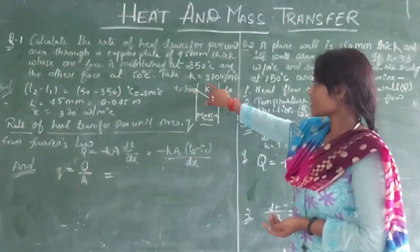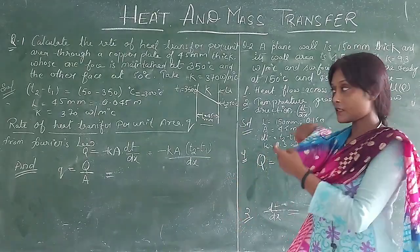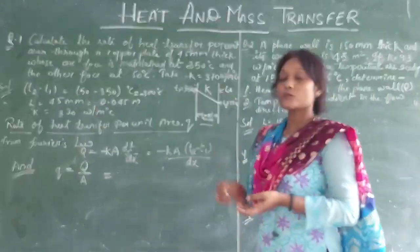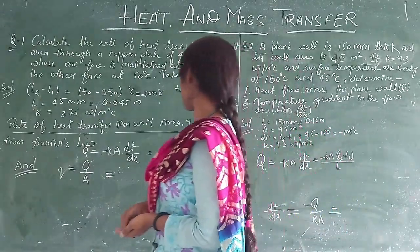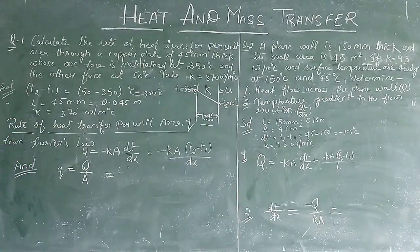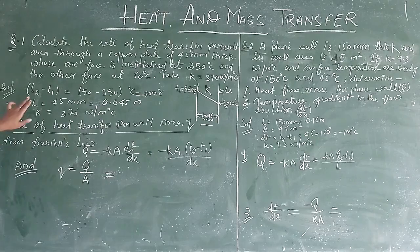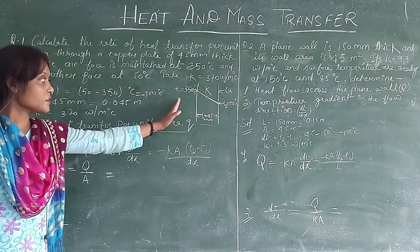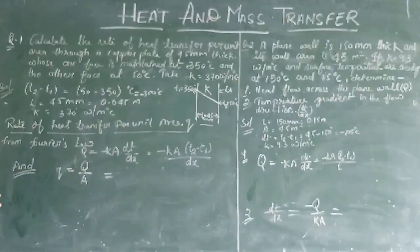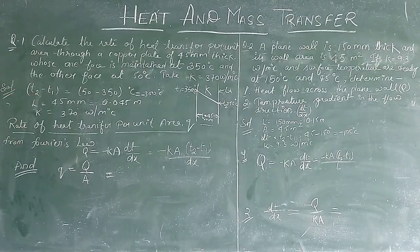Thermal conductivity of copper is 370 watt per meter centigrade. I am solving here. So first of all, which we have given, we have to summarize. Given is our first and second copper plate temperature. So here temperature difference, dt value.